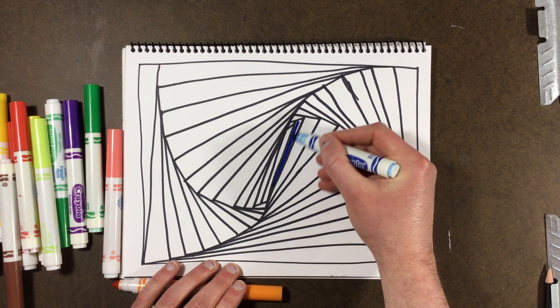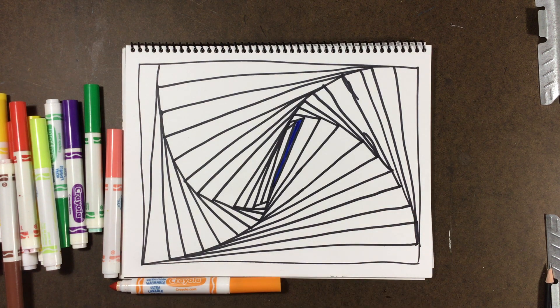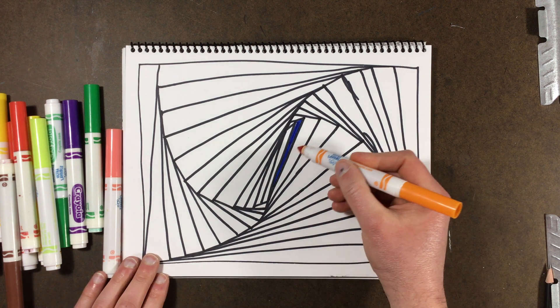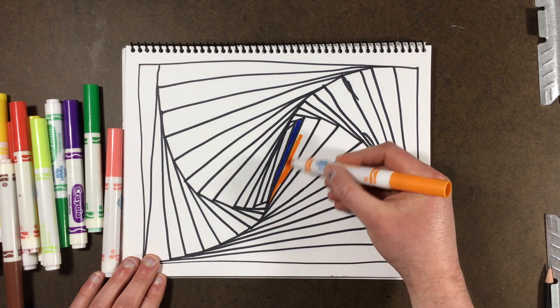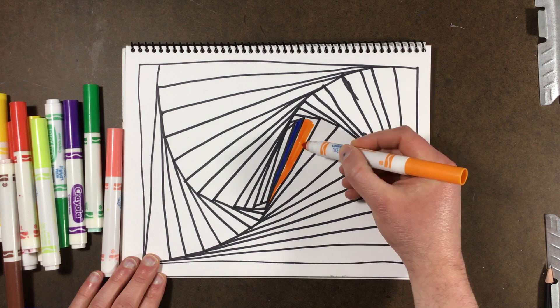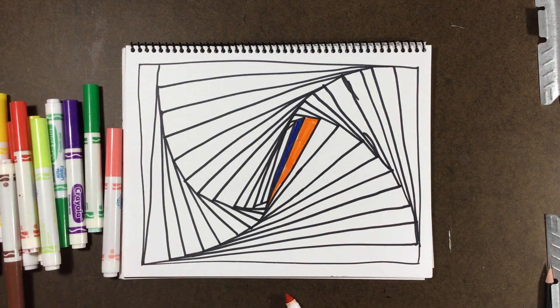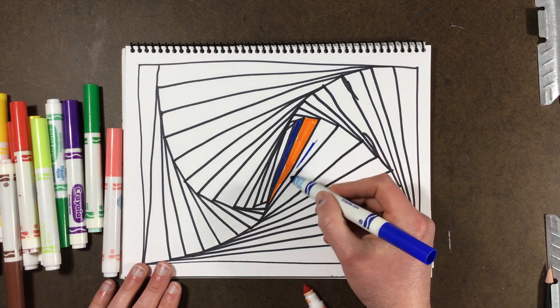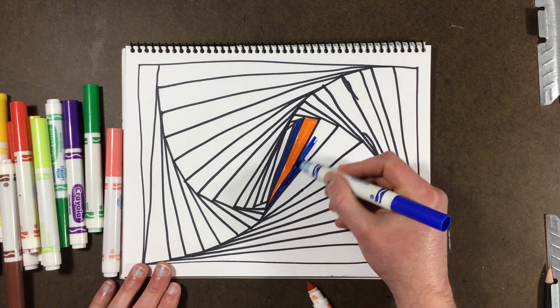I'm going to do every other box or cell in the color. Going back and forth, as long as you do every other cell, you get a really cool effect. Again, take your time with this.